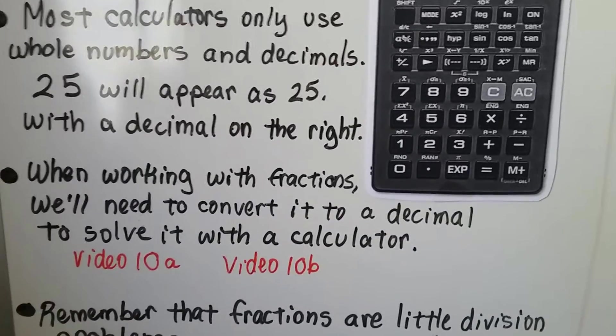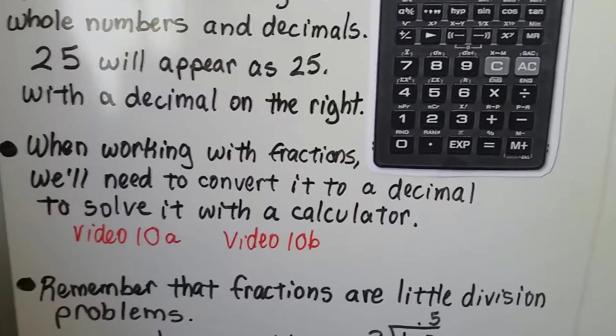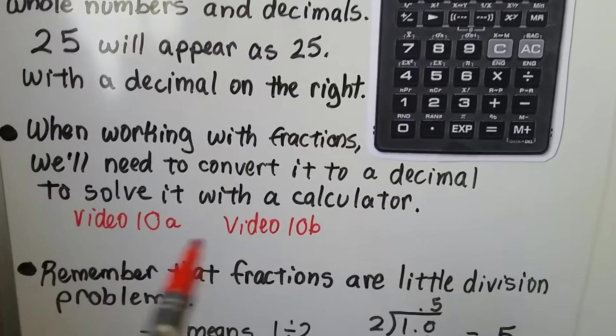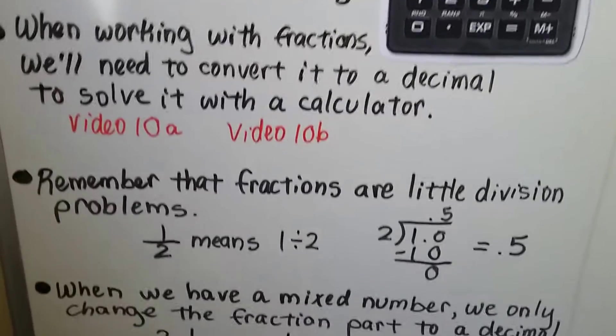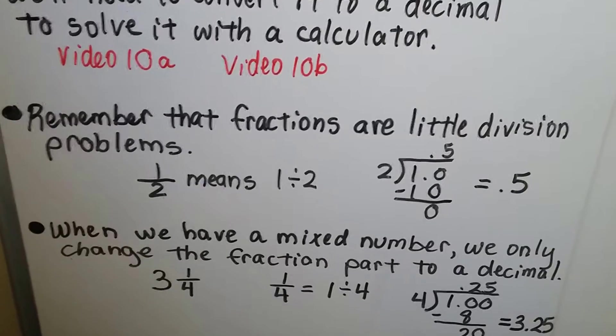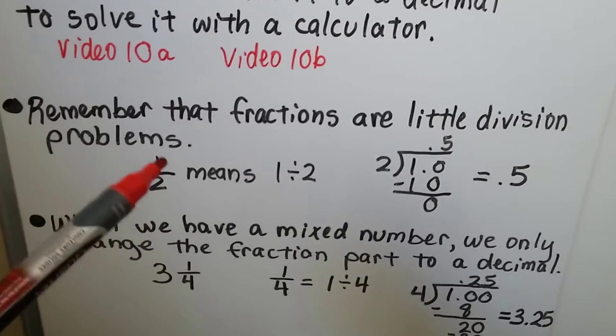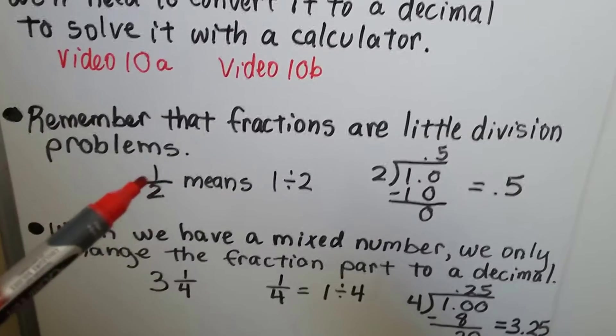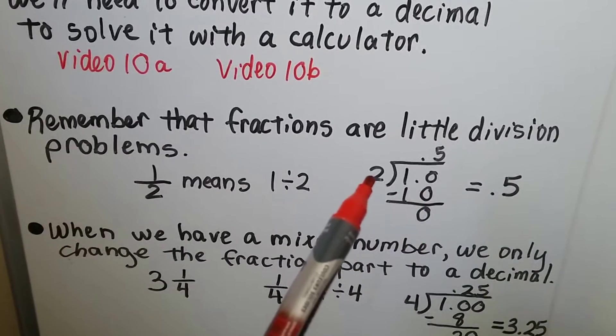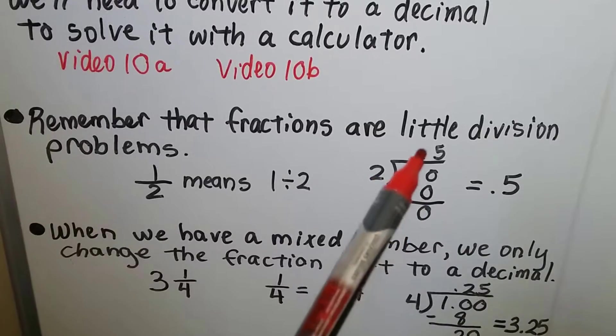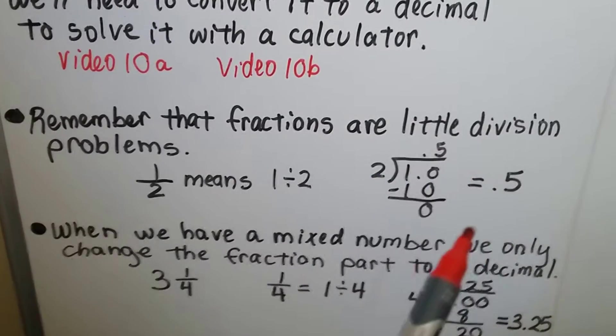And when working with fractions, we need to convert it to a decimal to solve it with a calculator. Now, we converted fractions to decimals and decimals to fractions in these videos, and there'll be links to those. Remember that fractions are little division problems. So, to convert a fraction to a decimal, we do 1 divided by 2. That fraction bar means divided by. We do 1 divided by 2, and we raise up our decimal point, and we see it's 0.5.